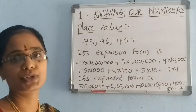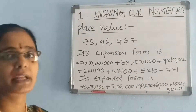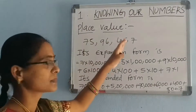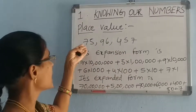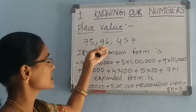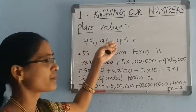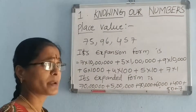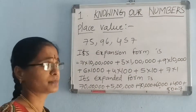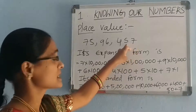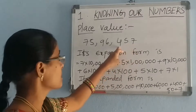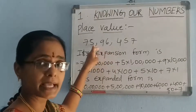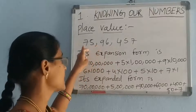Have you understood? Listen once again. Place value. The given number is 75,096,457. We know the place value: 1's place, 10's place, 100's place, 1000's place, 10,000's place, 100,000's place.